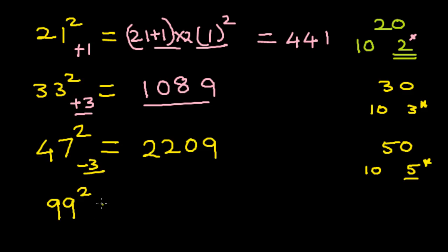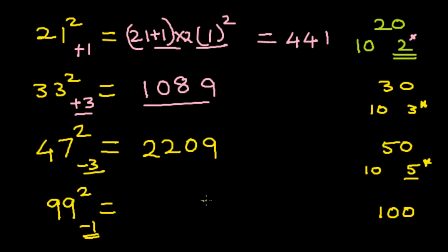Next we take the number 99 squared. We select the base 100. We subtract the number from the base: 99 minus 100 is minus 1. Now when you use the base 100, the square of this number gives you the first two digits. So square of 1 is 1, but you write 01 because it gives you the digits of the tens place as well. Then subtract: 99 minus 1 is 98. That's your answer: 9801.